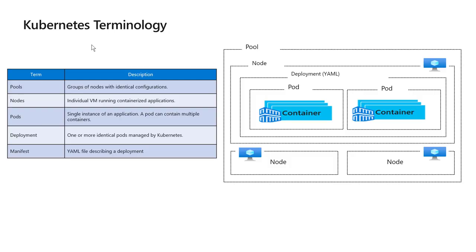Before we delve deeper into Kubernetes, let's understand the Kubernetes terminology. In a typical Kubernetes cluster, we have nodes. Nodes are individual VMs running a containerized application. Each node consists of pods. A pod is a single instance of an application and a pod can contain multiple containers inside it. Then we have the next set of abstraction which is called deployment. Deployment is one or more identical pods managed by Kubernetes, and this is described by the manifest file which is called a YML file.